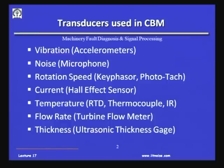A turbine flow meter is another device which can be very easily put online on a pipeline - all you will get is the speed at which the fluid is flowing through it. Once you know the area of the pipeline and multiply that, you get the flow rate instantaneously. When processes are very dynamic and flow rates are changing - particularly in large oil refineries and chemical plants - that is where we use turbine flow meters.